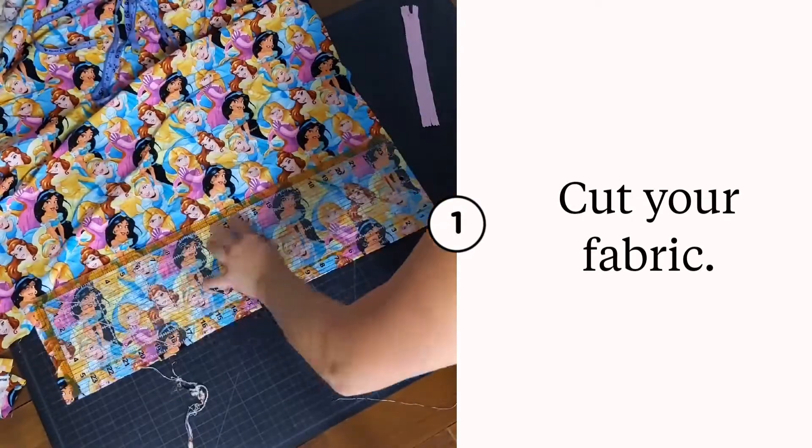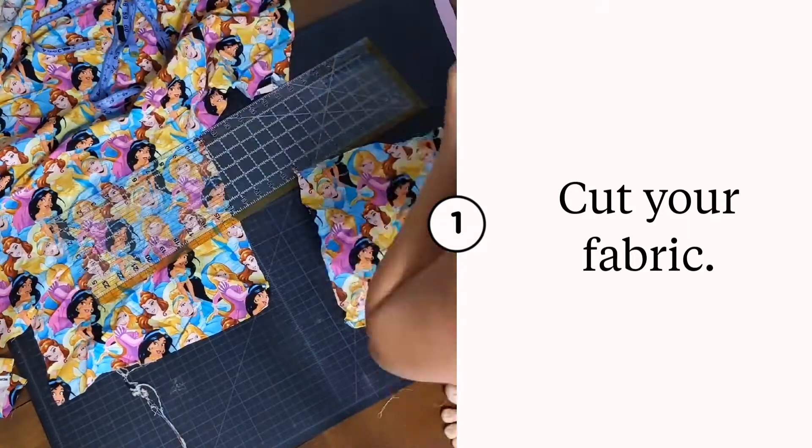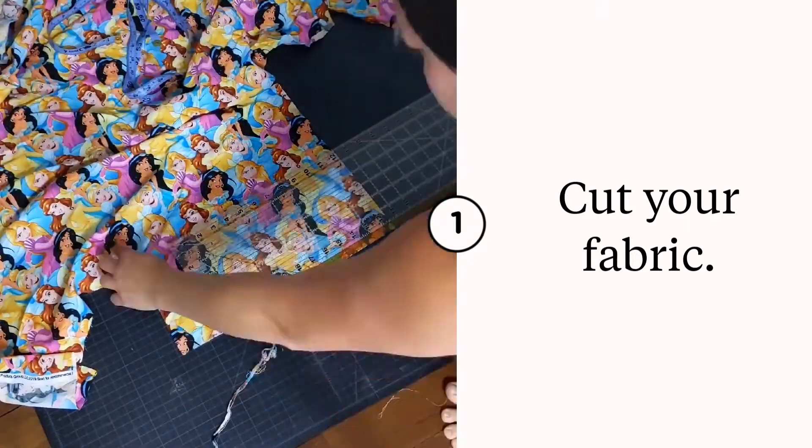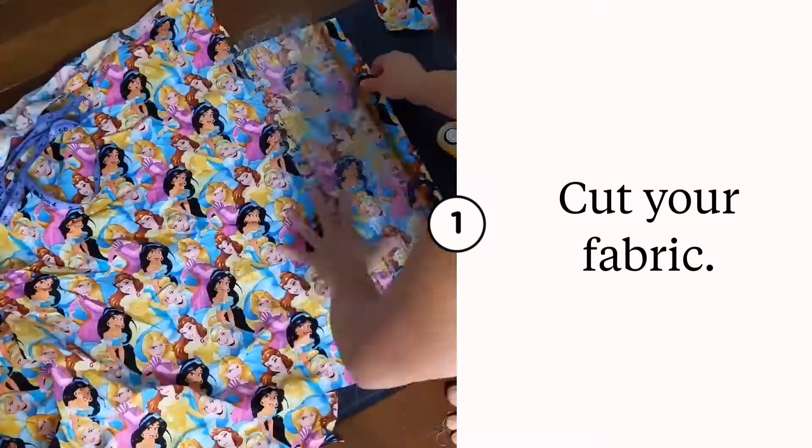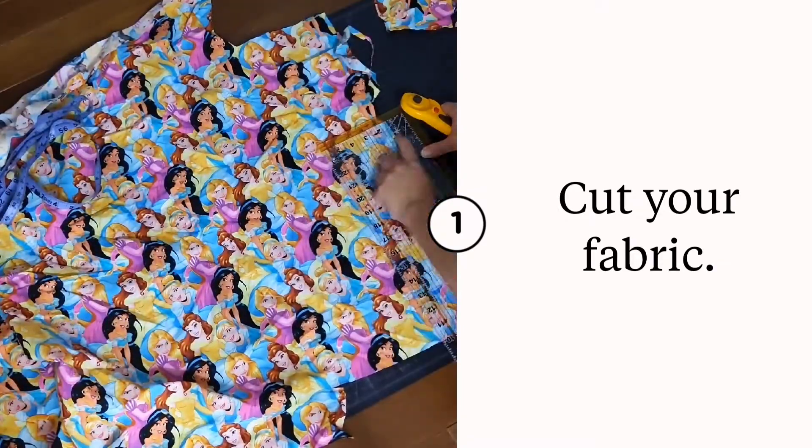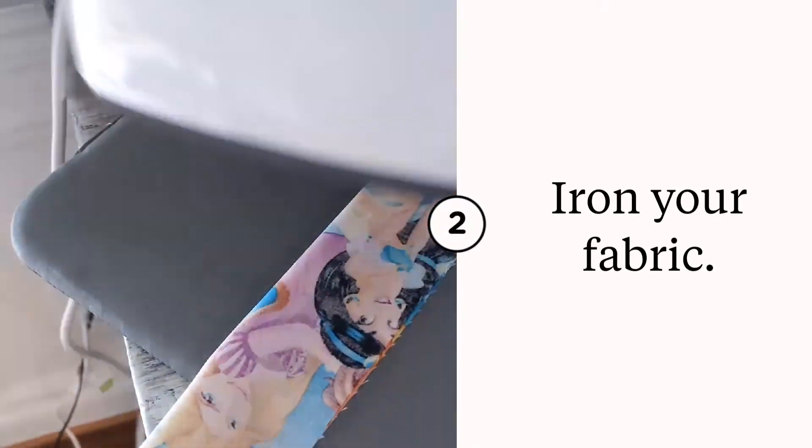Start by cutting out your fabric. You need a main body piece that is 10 by 12.5 inches, a second piece for the inside divider that is 10 by 8 inches, and your last piece is for the strap that's going to be 14 by 4.5 inches.